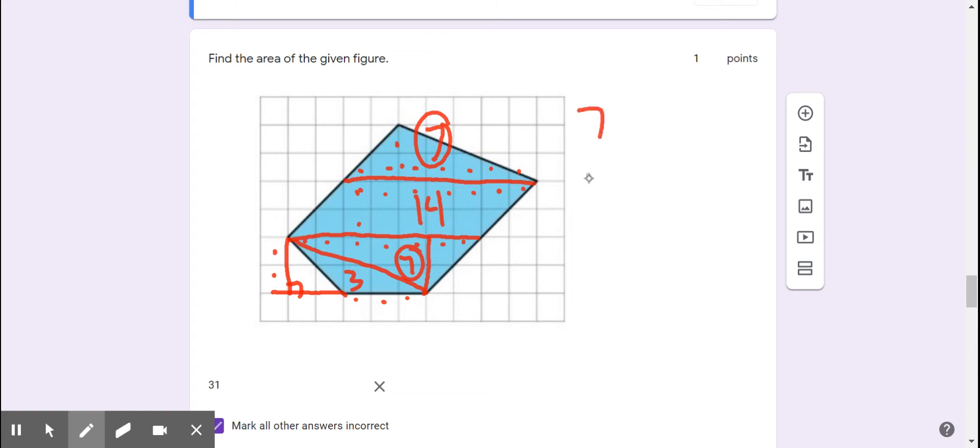So we have seven units plus seven units plus three units plus 14 units. I should be saying square units. 14 and seven is 21. Seven plus three is 10. 21 plus 10 is 31.